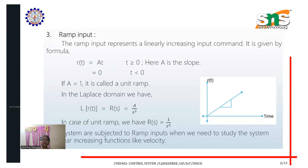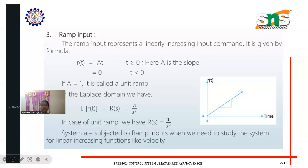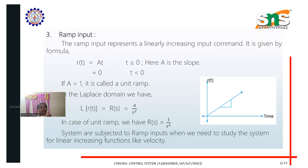Taking the Laplace transform, L{r(t)} = R(s) = a/s². In the case of a unit ramp, R(s) = 1/s². Systems are subjected to ramp inputs when we need to study the system for linearly increasing functions like velocity.